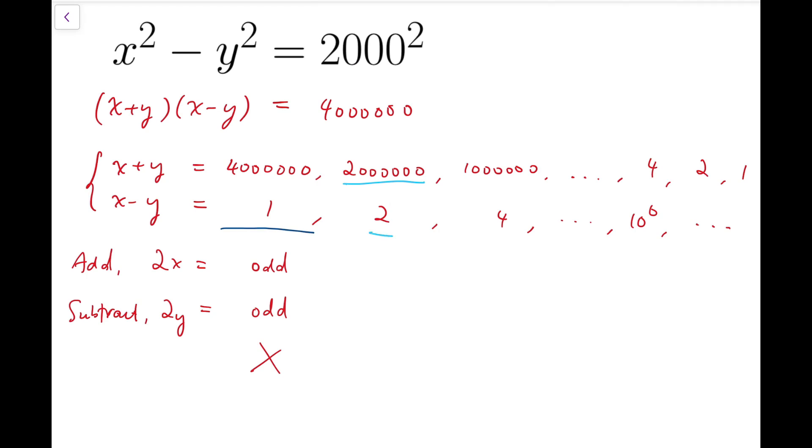Just like this, when the sum is 2 million and the difference is 2, then you can solve it and get some integers for x and y.